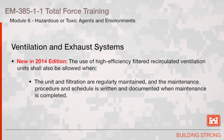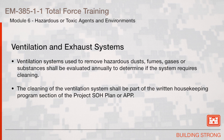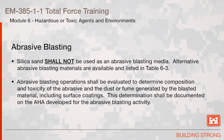Also new in the 2014 edition, the use of high-efficiency filtered recirculated ventilation units shall also be allowed when the unit and filtration are regularly maintained and the maintenance procedure and schedule is written and documented when maintenance is completed. The air is not recirculated into a confined space. The contaminant is not beryllium or chromium — fumes or particulate from beryllium or chromium are not to be filtered and recirculated. Ventilation systems used to remove hazardous dust, fumes, gases, or substances shall be evaluated annually to determine if the system requires cleaning. The cleaning of the ventilation system shall be part of the written housekeeping program section of the project SOH plan or APP.